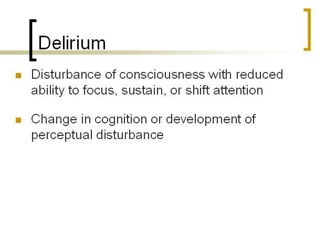Delirium is also associated with a change in cognition or a development of a perceptual disturbance. A change in cognition means something like a memory impairment, disorientation — where people are no longer oriented to time, place, or person — or maybe a language disturbance, not being able to speak clearly. Something like dysarthria, which is the impaired ability to articulate; dysnomia, the impaired ability to name objects; dysgraphia, the impaired ability to write; aphasia, rambling speech, pressured or incoherent speech, switching.